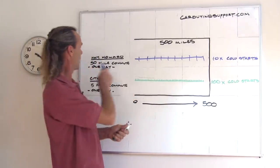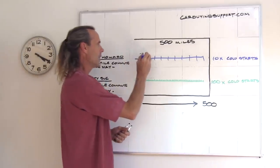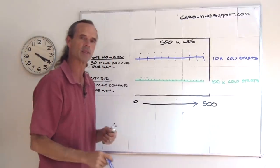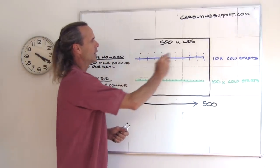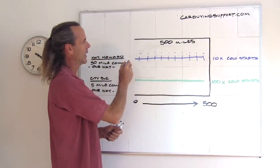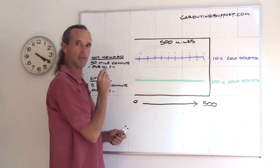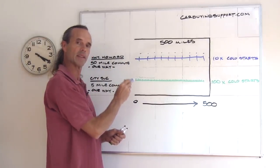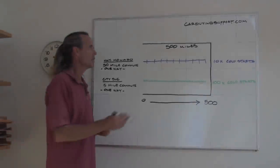Now, that brings up Highway Howard, who only has ten of these condensation burn-off events. This is going to result in a lot more oil life than City Sue, but there's other things at stake here, and that's what I'm going to go into next.